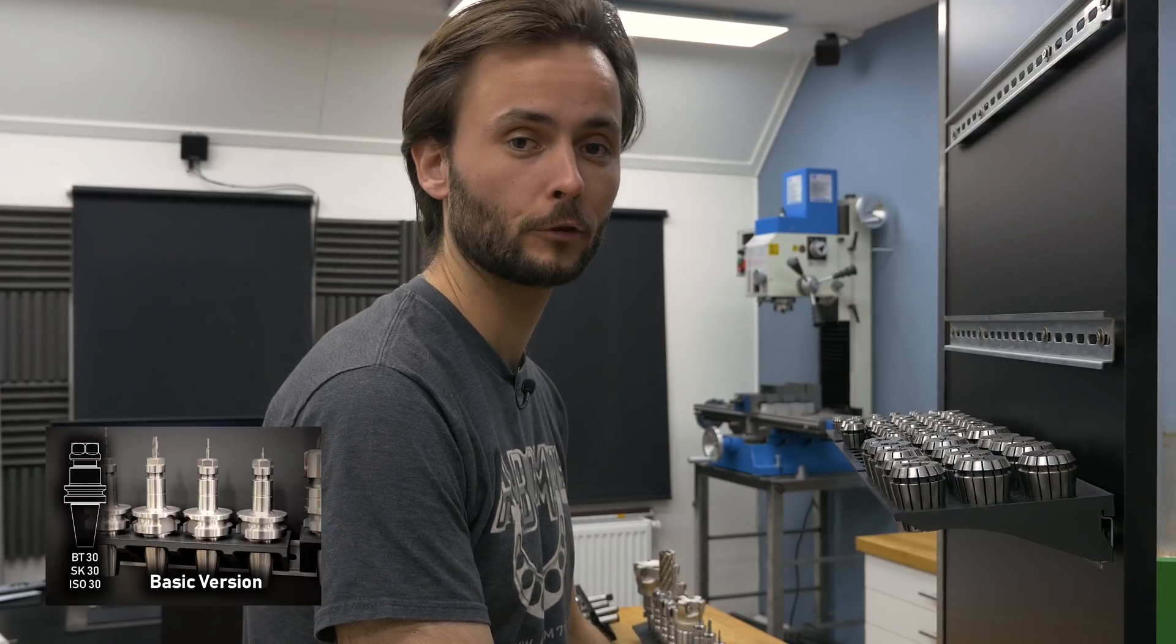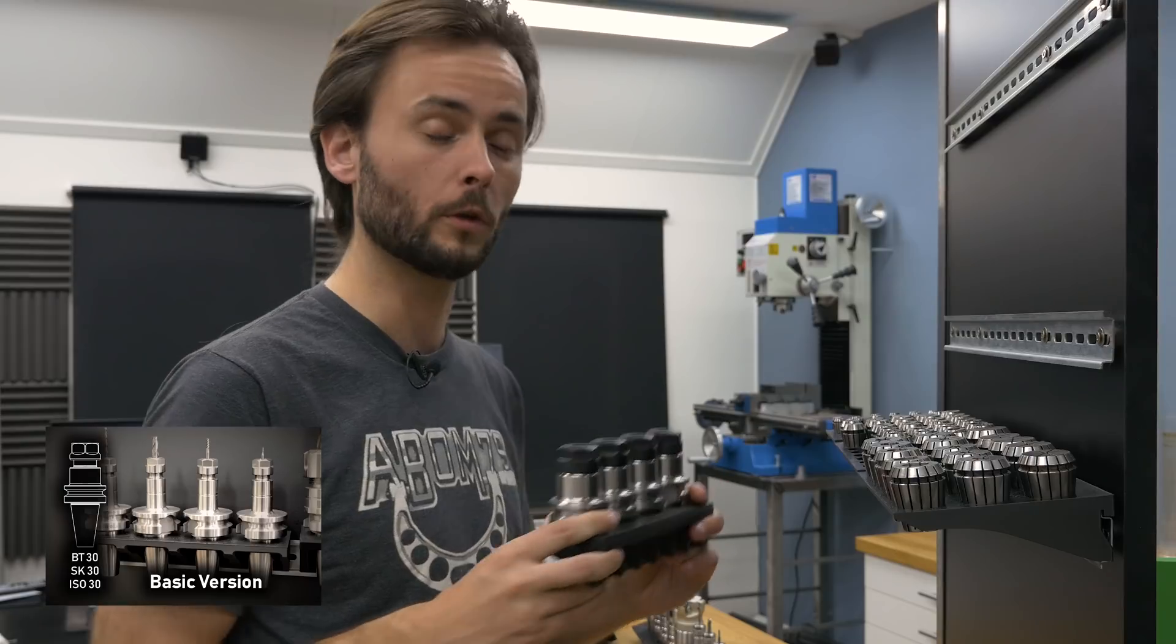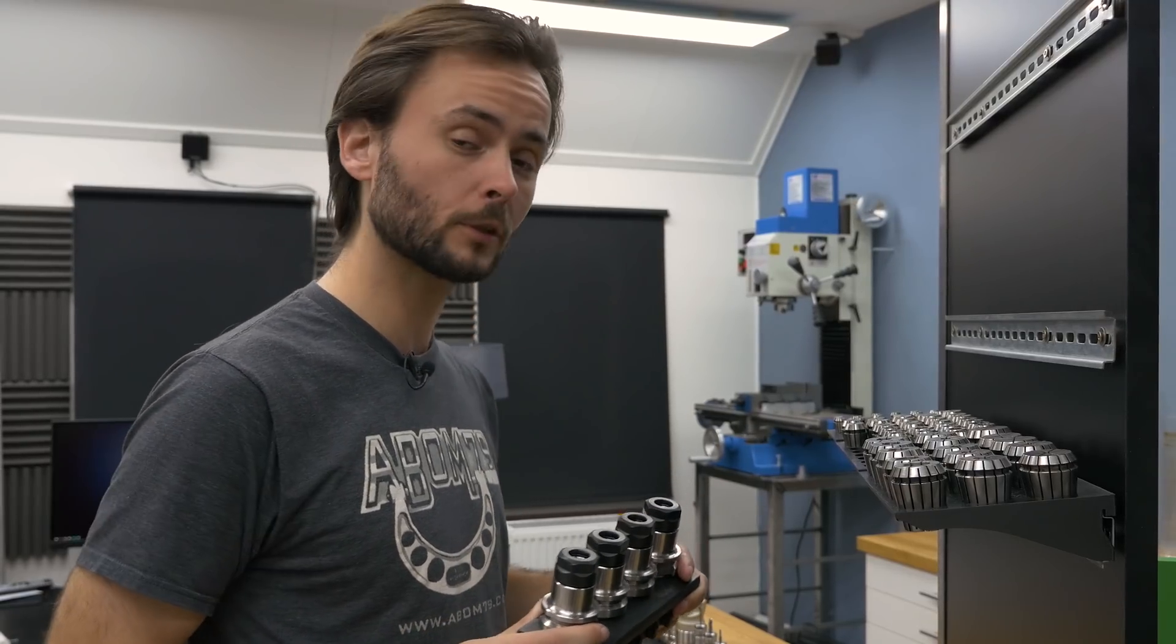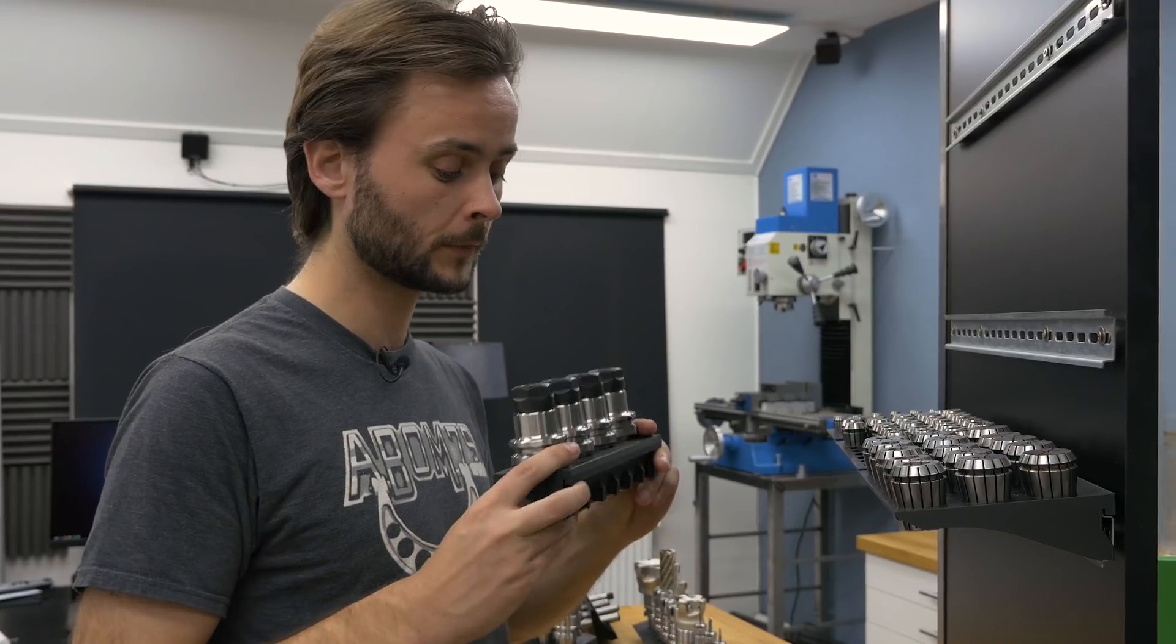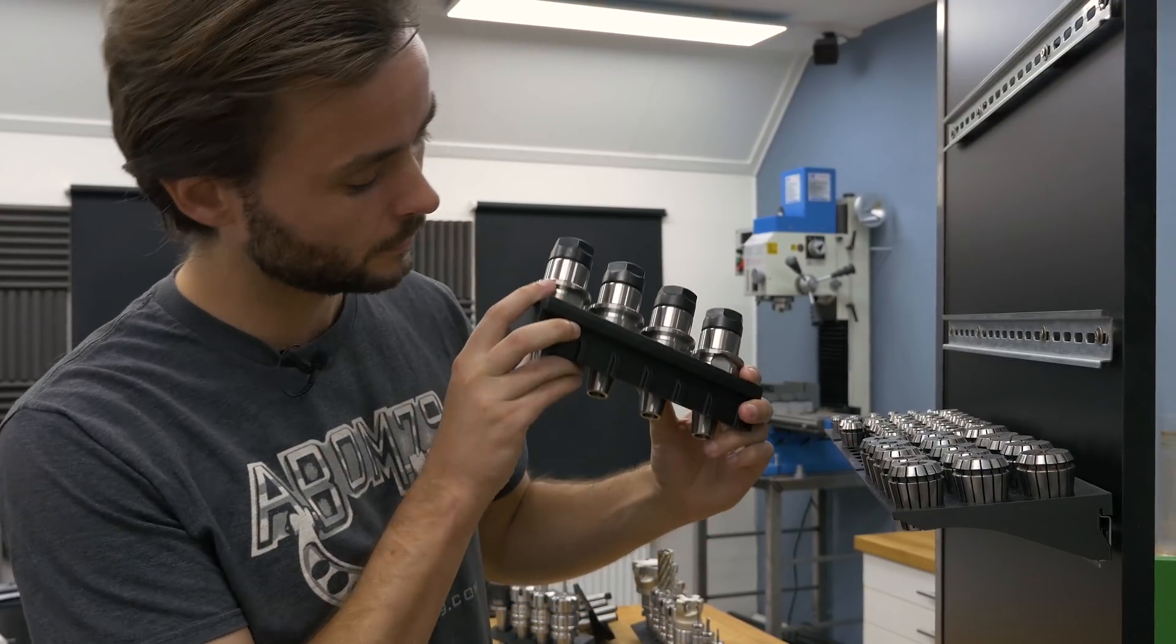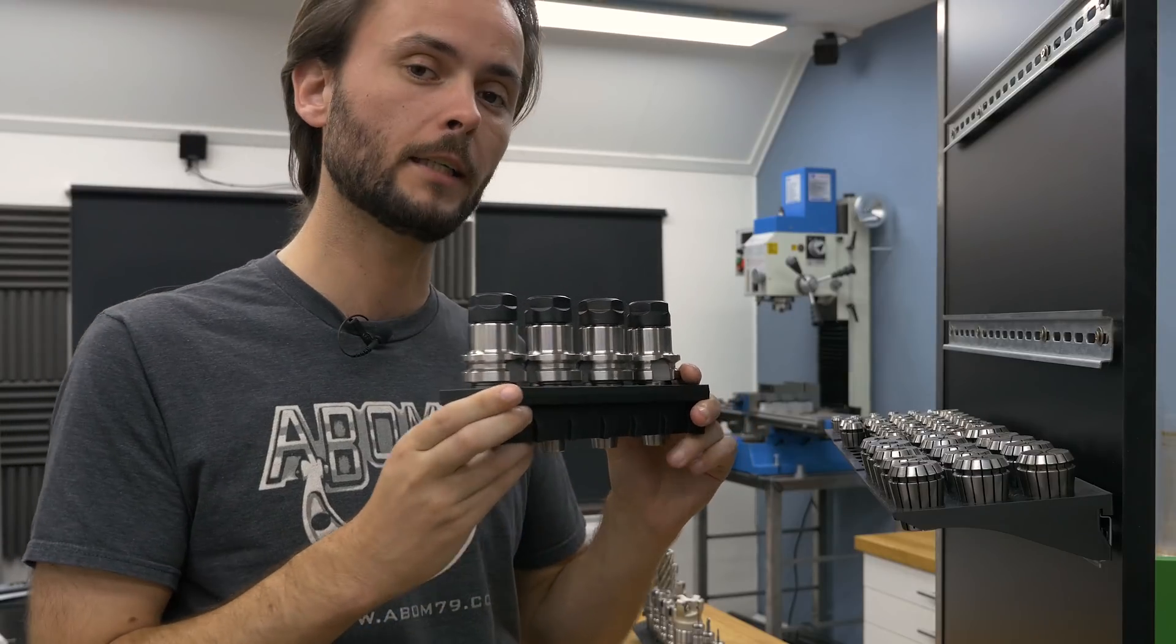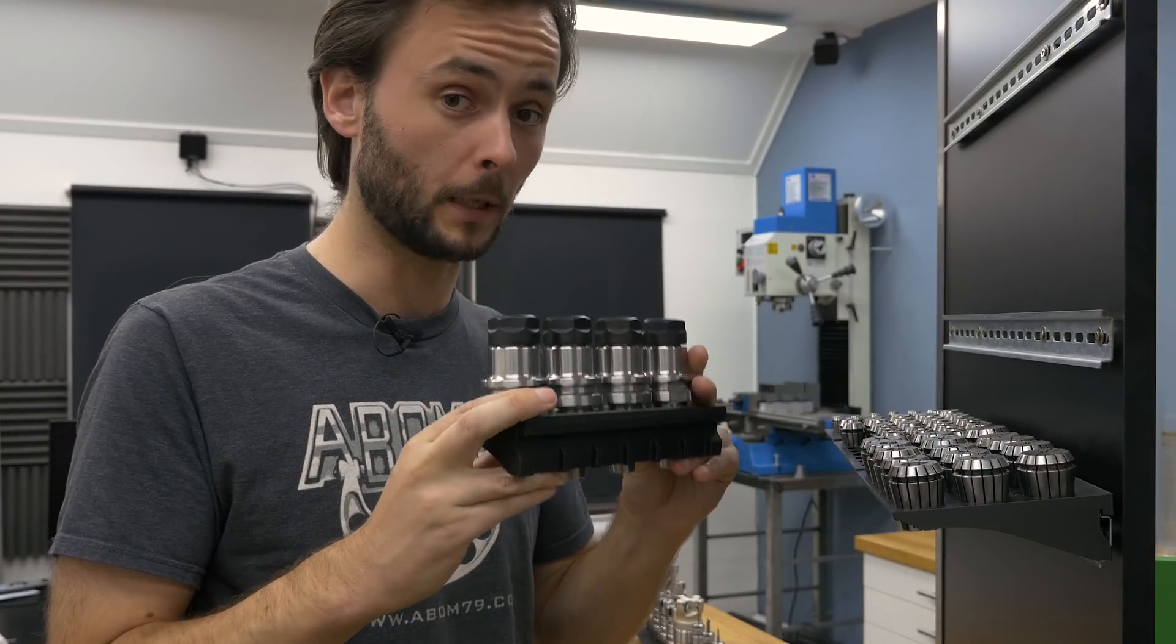So I also made mounting blocks for BT30 tool holders, so 30 taper holders, because they also fit ISO30 and SK30. These are the standard version. This one doesn't have any additional reinforcement. It's just printed plastic.